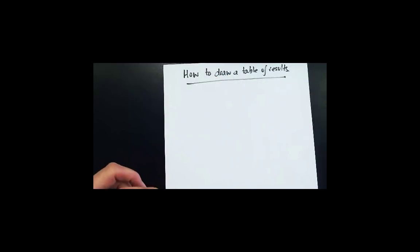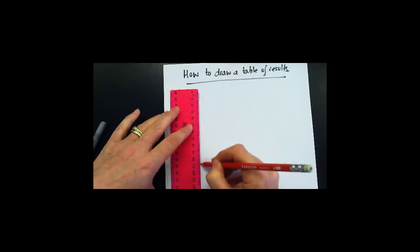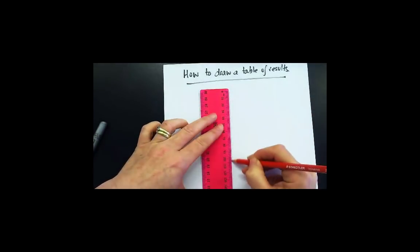The table needs to be drawn in pencil. Use a ruler to rule the right number of columns that you need for the data you are collecting.